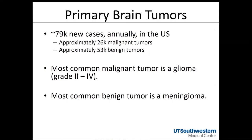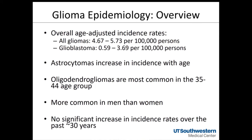Some good numbers to have in your back pocket: there are about 80,000 new cases of primary brain tumors annually in the US. Approximately one-third are malignant and two-thirds are benign. The most common malignant tumor is a glioma (grades two through four), and the most common benign tumor is a meningioma. Age-adjusted incidence rates for all gliomas are about 4.5 to 5.5 per 100,000 persons; glioblastoma is 0.6 to 3.7. These data come from CBTRUS, an excellent resource for CNS tumor epidemiology.